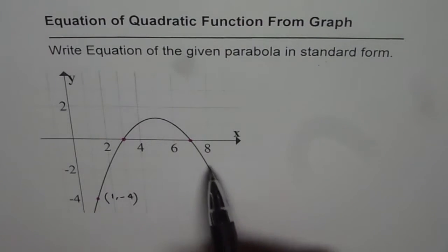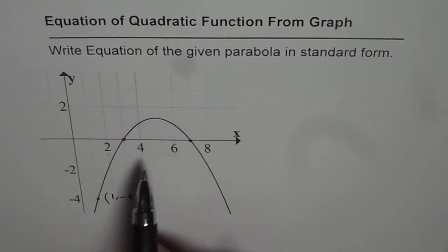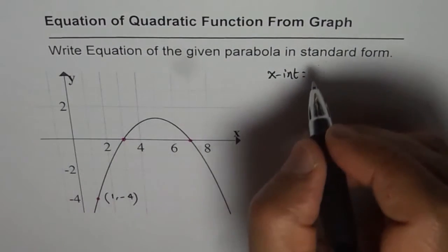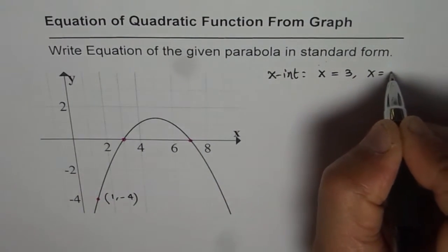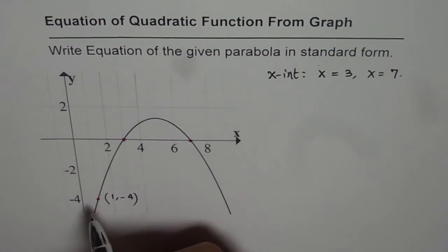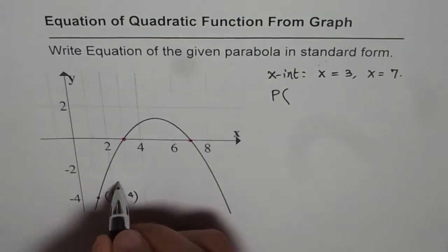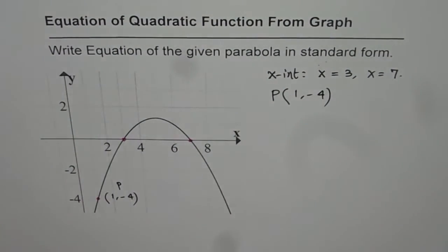We are given a parabola here which opens downwards and there are two x-intercepts. The x-intercepts are at x = 3 and x = 7. This parabola also passes through the point P(1, -4). That is what is given to us.